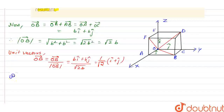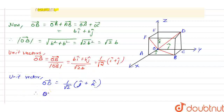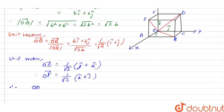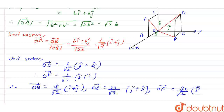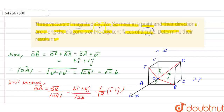Similarly, the unit vector along OD is (1/√2)(J-hat + K-hat) and the unit vector along OF is (1/√2)(K-hat + I-hat). Therefore, OB vector = (A/√2)(I-hat + J-hat), OD vector = (2A/√2)(J-hat + K-hat), and OF vector = (3A/√2)(K-hat + I-hat), because it is given that the three vectors have magnitudes A, 2A and 3A.